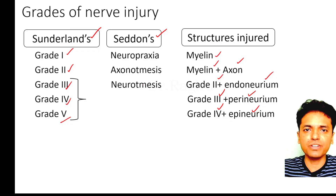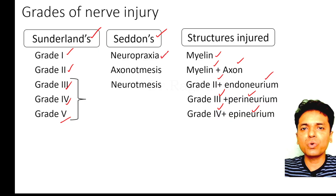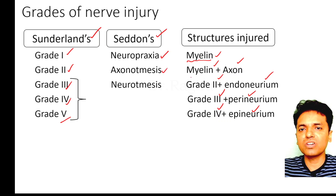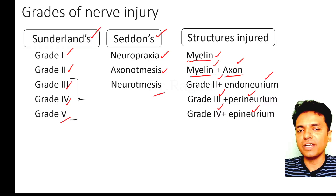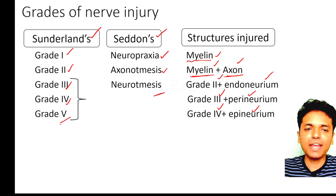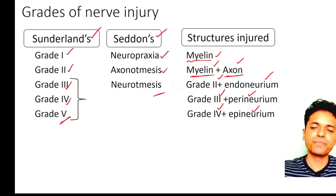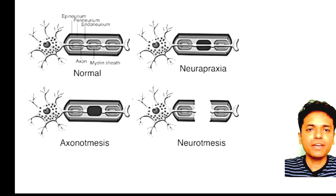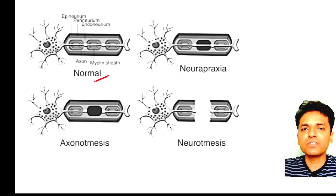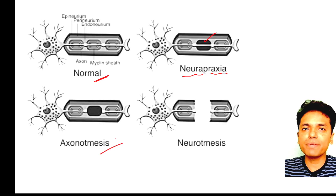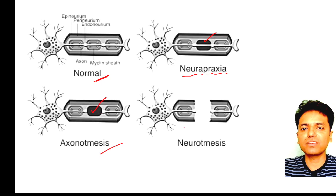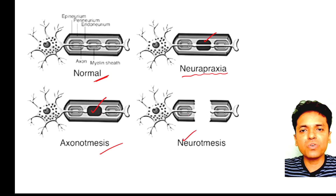In Seddon's classification there are three grades. Neuropraxia involves injury to the myelin only. Axonotmesis involves injury to myelin plus the axon. Neurotmesis involves transection of the entire nerve — equivalent to Grade 5 under Sunderland's classification. Visually: neuropraxia shows myelin injury only, axonotmesis shows injury to both myelin and axon, and neurotmesis shows entire nerve fiber transection.